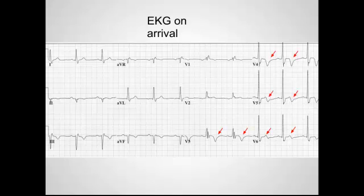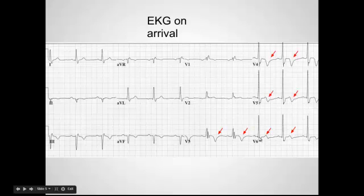Let's look again at his EKG on arrival. You can see that he does have these very deep T wave inversions here in V3 and V4, the precordial leads, and also biphasic T waves in V5 and V6. And again, this is during a chest pain free period. He has negative troponin and no ST elevations.